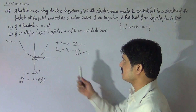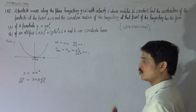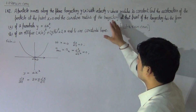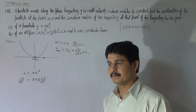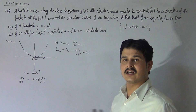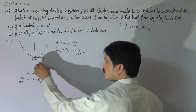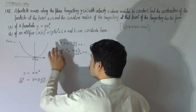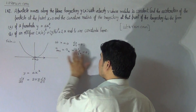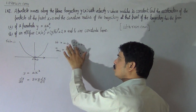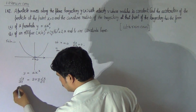Tangential acceleration at that point will be 0 because velocity is constant. Tangential acceleration has the same meaning as ax at that point, and we see that this will be 0 because velocity is constant. Since the modulus of velocity is constant, tangential acceleration will be 0, and therefore d squared x by dt squared is also 0. Now, double differentiate this equation.